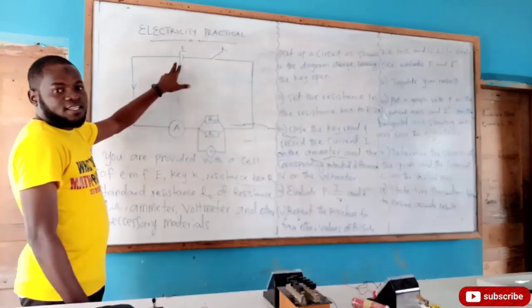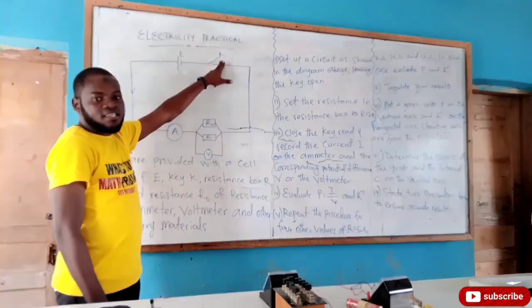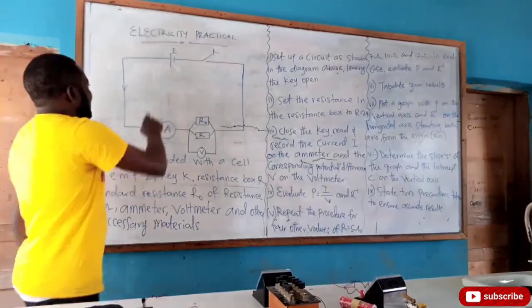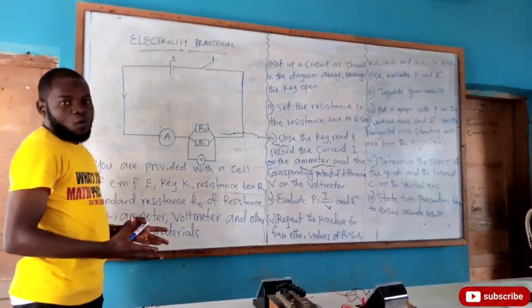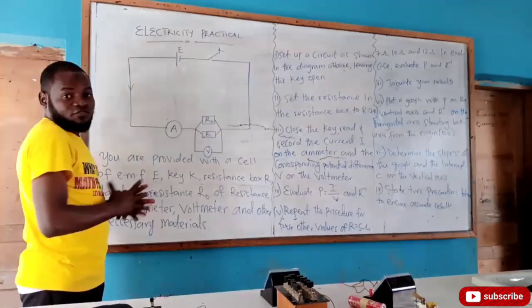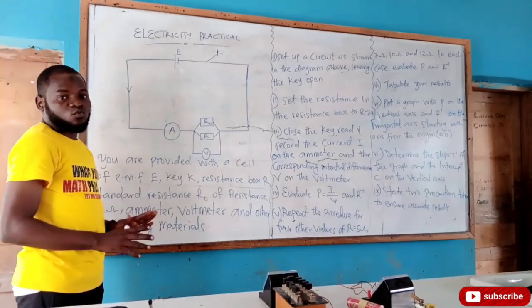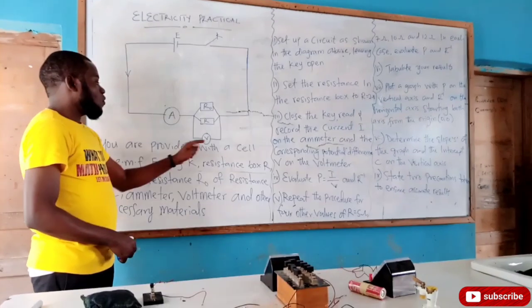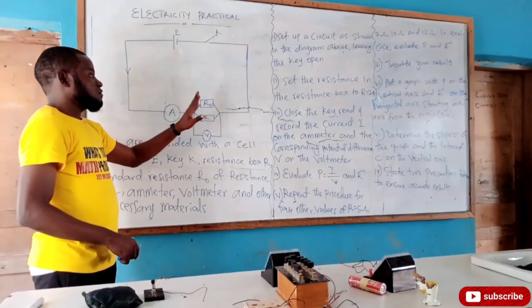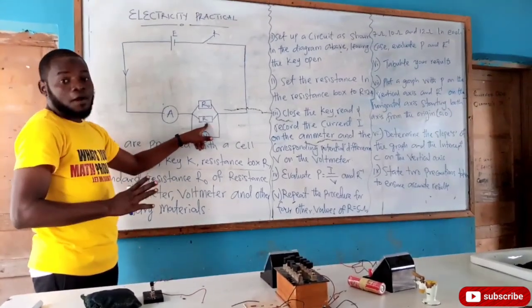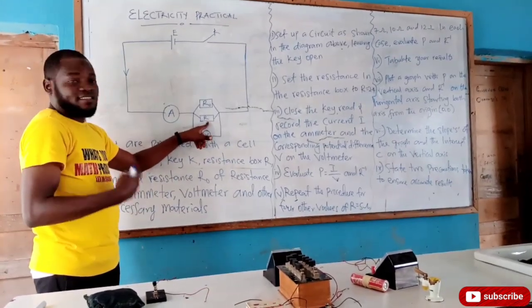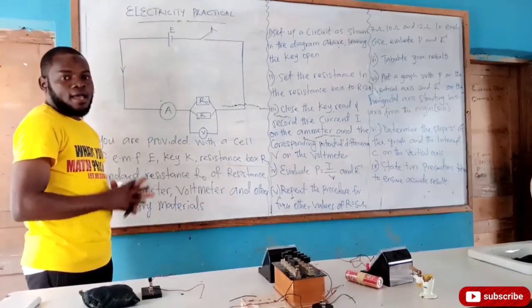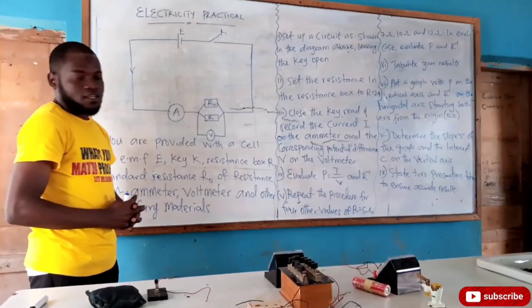If the poles are of equal length, then it's going to be a capacitor. This represents a key, and when you talk about a key, you are talking about the switch — what you can use to turn it on and turn it off. The lines here are known as the connecting wires. Anywhere you see A like this, it represents an ammeter. And when you see V, it represents a voltmeter. R₀ represents a standard resistor, and just R represents a resistor that can be varying — in most cases, it's a resistance box.